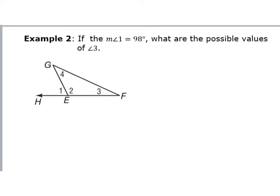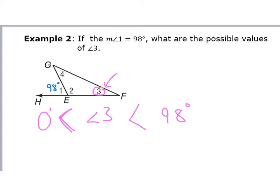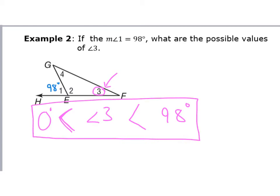Here's another example. If angle one is 98 degrees, what are the possible values of angle three? Angle one is 98 degrees and that's an exterior angle. I know the exterior angle is always greater than the remote interior angles, and angle three is a remote interior angle. So angle three has to be less than the exterior angle 98 — angle three has to be less than 98 degrees. I also know angle three has to be bigger than zero, because zero degrees is the smallest you can get for a triangle angle. So angle three has to be between zero and 98 degrees.